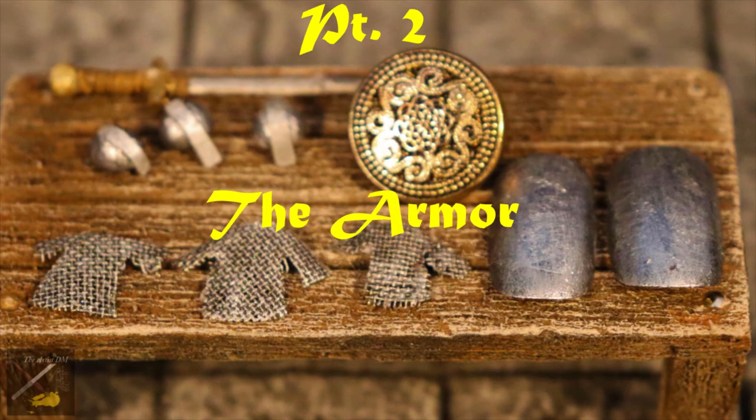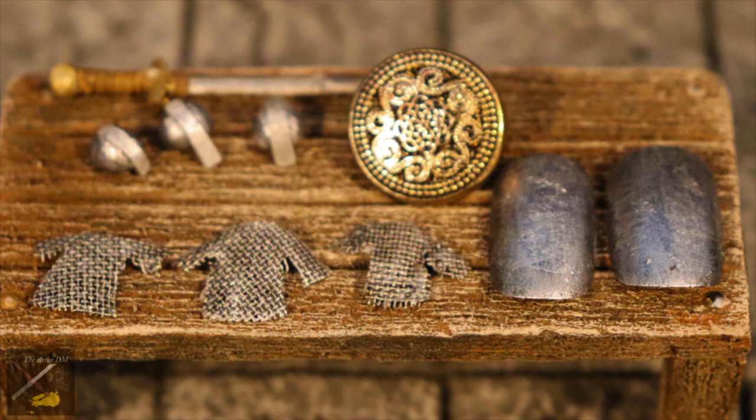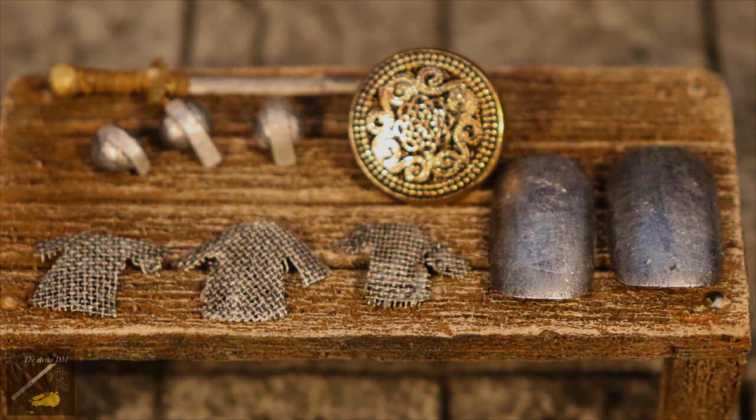Alright, now for the armor. For the round shield, I just used a button and glued it on the table as is. For the more rectangular shields, I used fake fingernails. I just black bombed them with spray paint, covered that with acrylic black paint, and then went over with a couple coats of metallic paint. But for the helmets and the chainmail, we'll take a closer look.